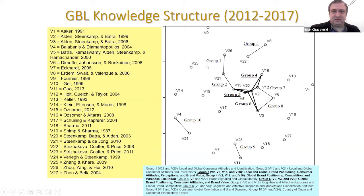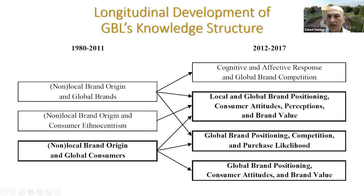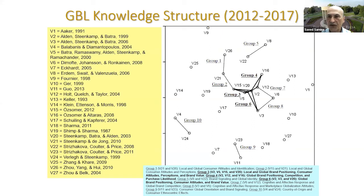You'll notice we have a very large chain here and three isolated research groups as well. The research chain deals a lot with local and global topics on a variety of issues — whether it's consumer attitudes, positioning, competition, or what have you — and we have three cliques as part of that. What we observe here is that the literature in global branding has now converged from the earlier map, which was more scattered. Here a lot of the pieces have converged, indicating that the field is becoming more mature.